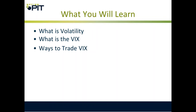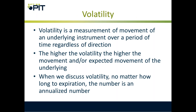Today we're going to talk about what is volatility, what is VIX, and ways to trade the VIX. Volatility is a measurement of movement of an underlying instrument over a period of time regardless of direction. The higher the volatility, the higher the movement and expected movement of the underlying. When we discuss volatility, no matter how long to expiration, the number is an annualized number. So if I'm looking at volatility in Apple options that expire next week and that volatility is 50, that's 50 on an annualized basis — it doesn't mean it's going to move 50% this week.